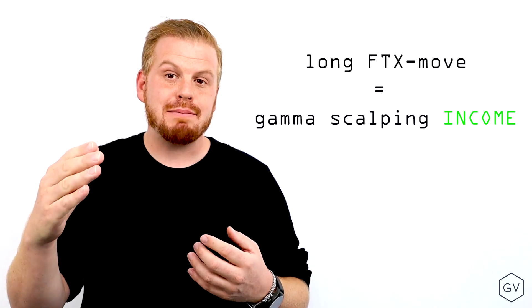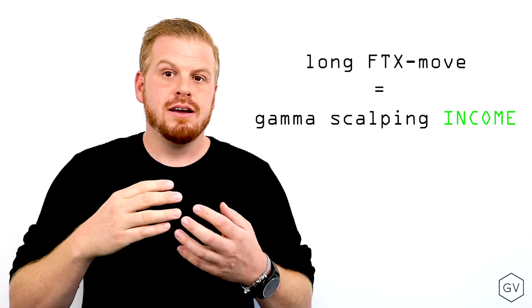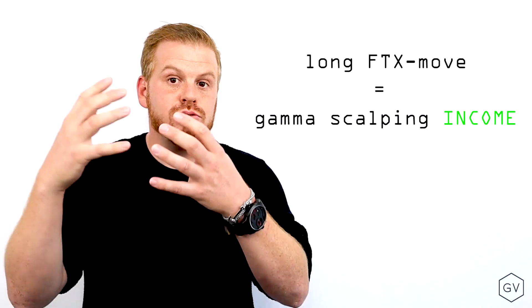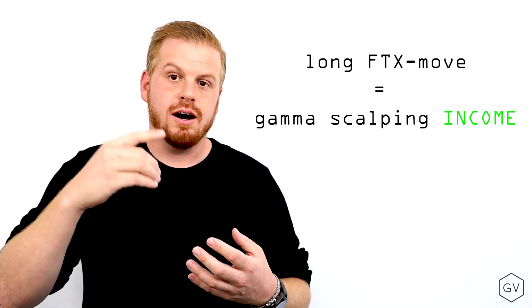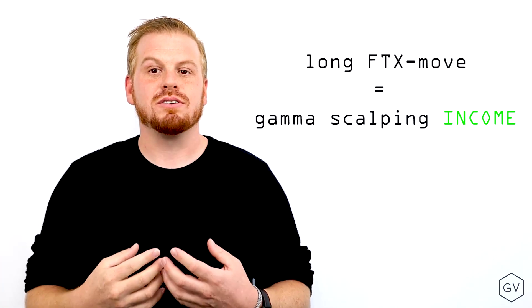If you expect volatility to happen, just like we explored in our previous example, and the underlying goes crazy, well now you can gamma scalp very profitably because the underlying prices move enough for you to create income from rebalancing your deltas.